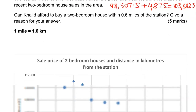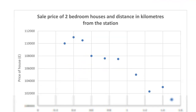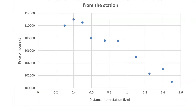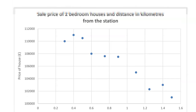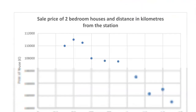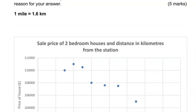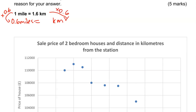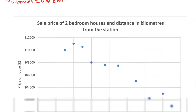We're looking for 2 bedroom houses within 0.6 miles of the station. The distance in the scatter diagram seems to be given in kilometres, so we're going to need to convert that into miles. We're looking for 0.6 miles — what's that in kilometres? To get from 1 to 0.6, we've multiplied by 0.6. So 1.6 times 0.6 gives us 0.96 kilometres.